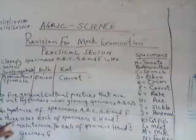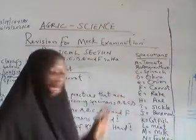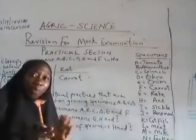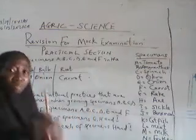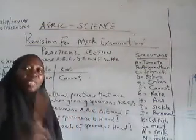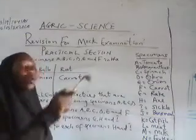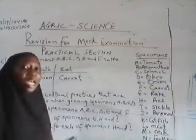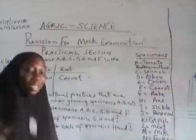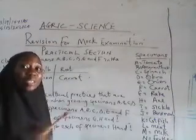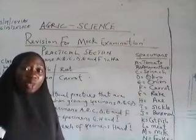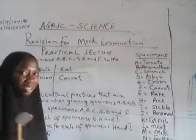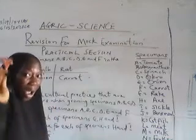State three uses of specimen G, which is the rake. We are all familiar with the rake. The rake can be used to remove debris or trash on the farm. It can be used to level the soil on the farm. It can be used to drag out stones on nursery beds. It can also be used to cover up seed after broadcasting. These are the uses of the rake.